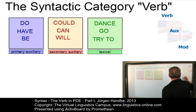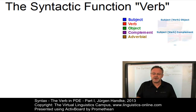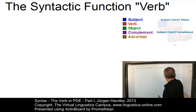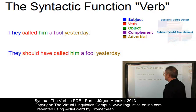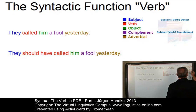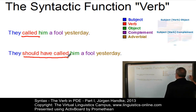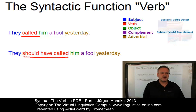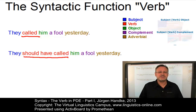There is also the syntactic function verb, where verb is one of the five elements of clause structure: subject, verb, object, complement, and adverbial. Here are two examples. 'They called him a fool yesterday' — here call is the syntactic function verb. In the second sentence, 'should have called' is again the syntactic function verb. So the syntactic function can be realised by a single lexical verb or by a single lexical verb plus up to three preceding auxiliary verbs.